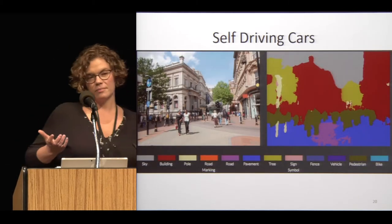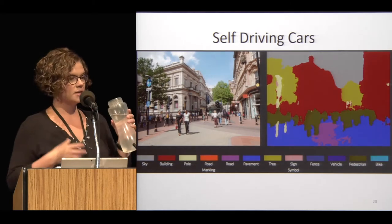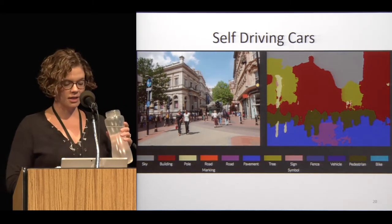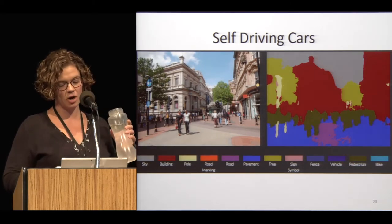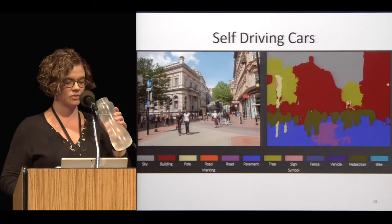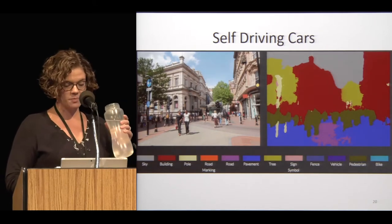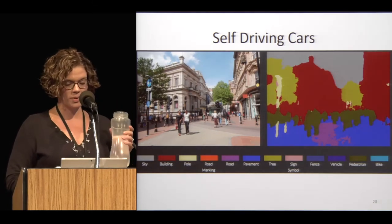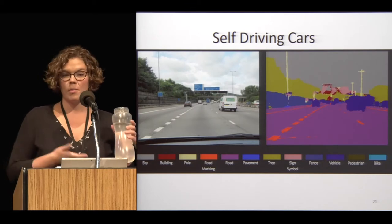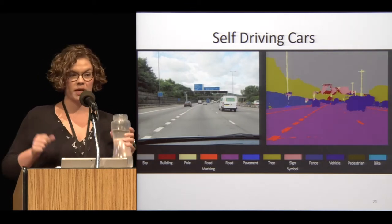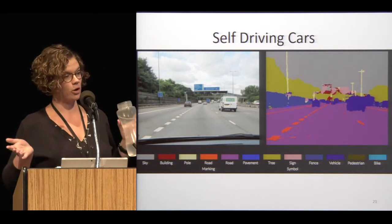Computer vision is now being integrated into self-driving cars and can do the kind of segmentation required for complex tasks — figuring out where are the people in this picture, where are the buildings, where's the road, and even where are the markings on the road so that the car knows where to stay.